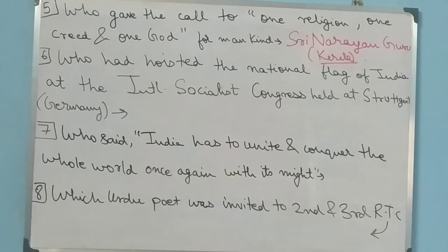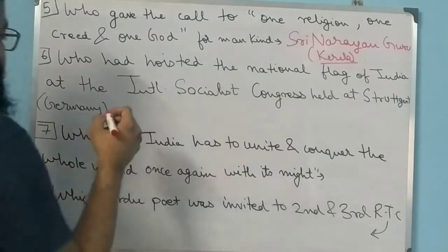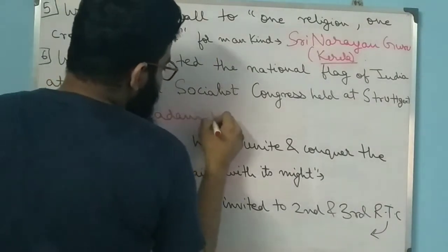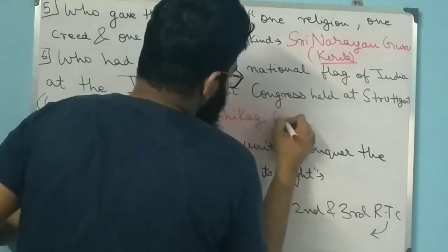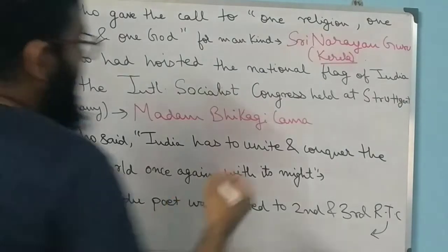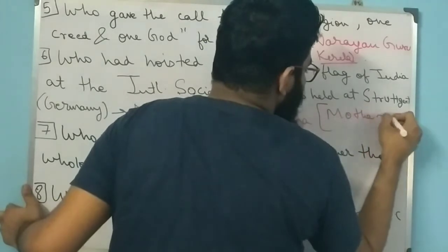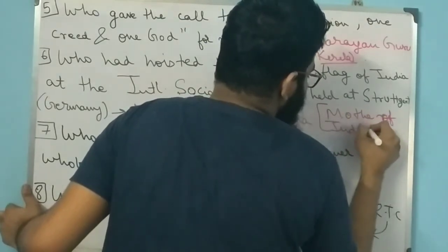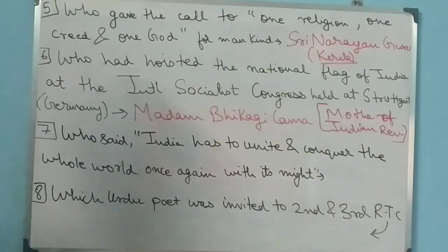Question 6: Who had hoisted the national flag of India at the International Socialist Congress held at Stuttgart - which is in Germany, spelled S-T-U-T-T-G-A-R-T? The answer is Madam Bhikaji Cama. She is a quite famous personality. One more question arises about her: she is called the 'Mother of Indian Revolutionary' - and the answer to that is also Madam Bhikaji Cama.